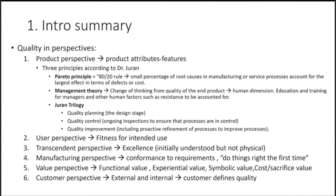The second quality perspective is the user perspective — fitness for intended use — meaning: does the product match what I want and can I actually use it for what it's intended? The transcendence perspective is excellence — something not very tangible, initially understood but not physical. The manufacturing perspective is conformance to requirements, and it's very important that you do things right the first time.